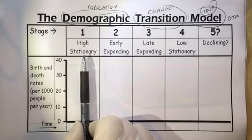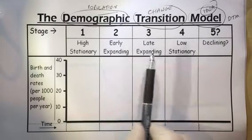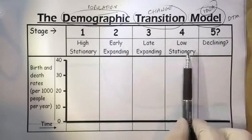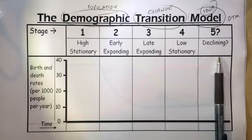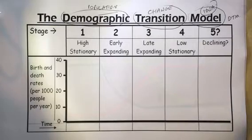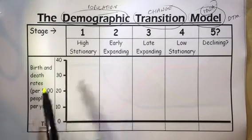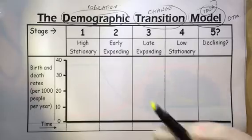Each country goes through many stages. Sometimes it can be very quick through the stages; sometimes it can take a huge amount of time. There are stages one, two, three, four, and stage five — there's a little debate about stage five at the moment, but some countries are thought to be in it. Let's look at how the birth rate, the death rate, and the total number of people change every year.